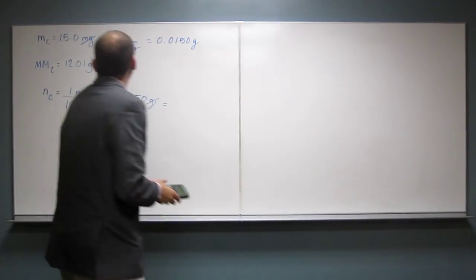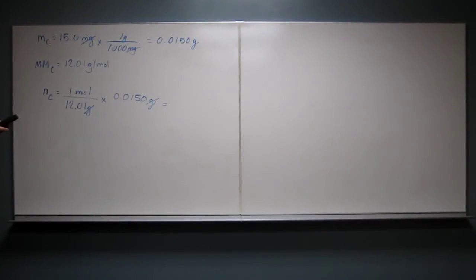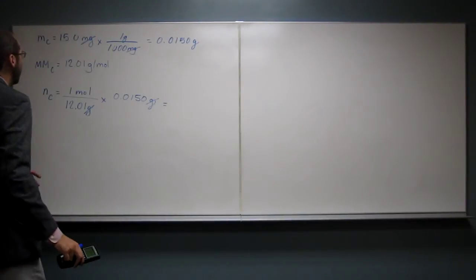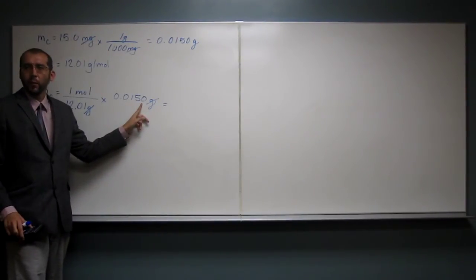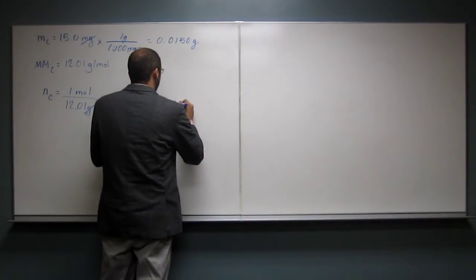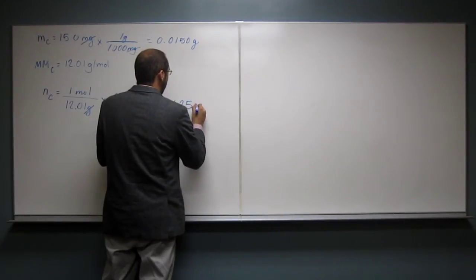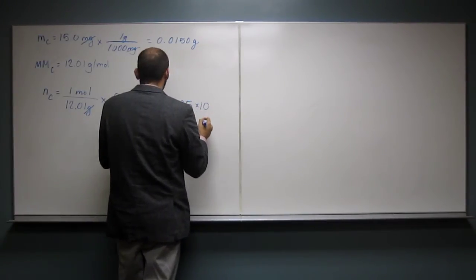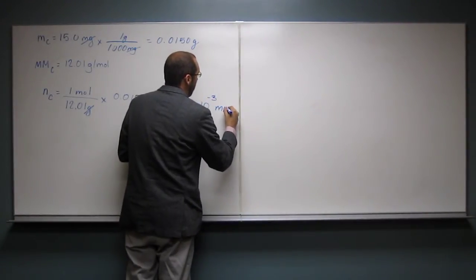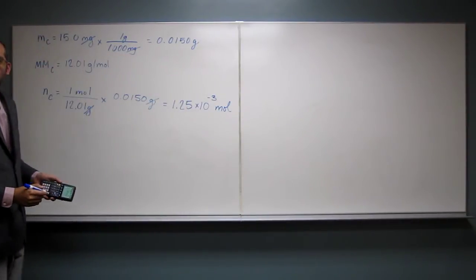Let's do that calculation together. So the number of moles that I got, and since this is three significant figures, I'm going to round to three significant figures. 1.25 times 10 to the negative 3 moles of carbon. That's how many moles of carbon we've got.